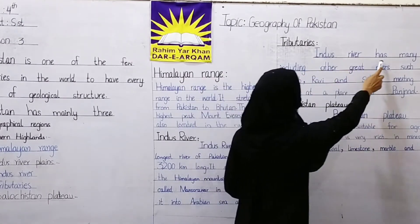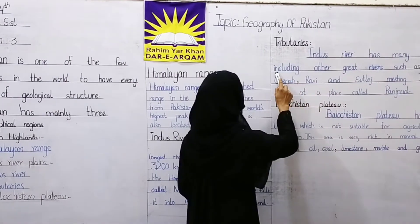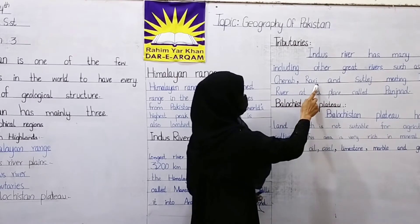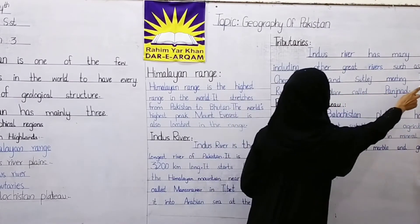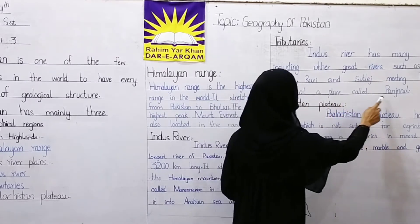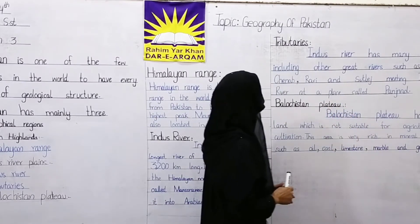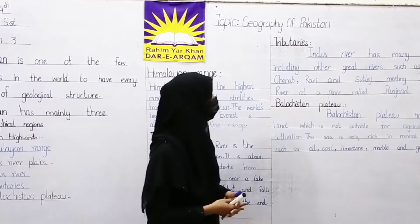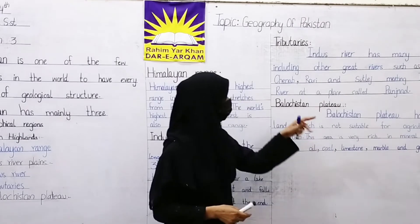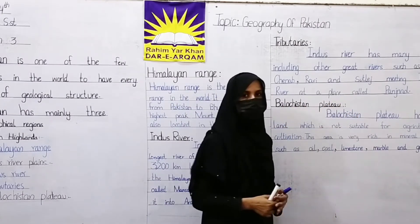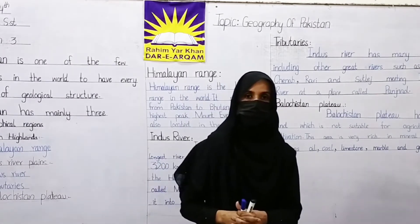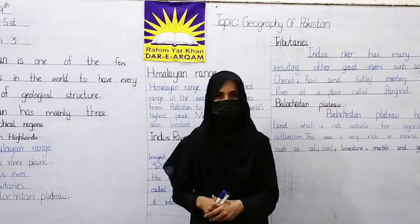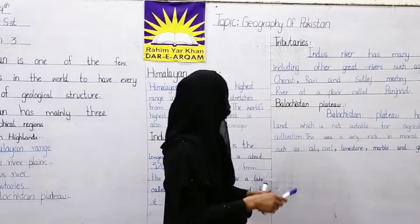Indus River has many tributaries including other great rivers such as Jhelum, Chenab, Ravi, and Sutlej, which meet the Indus River. These five rivers come together and join the Indus River.